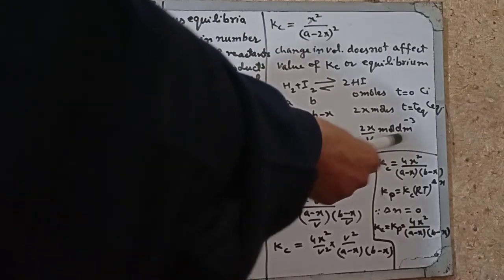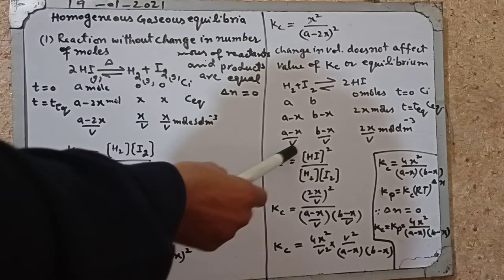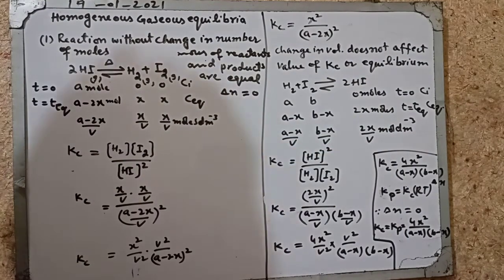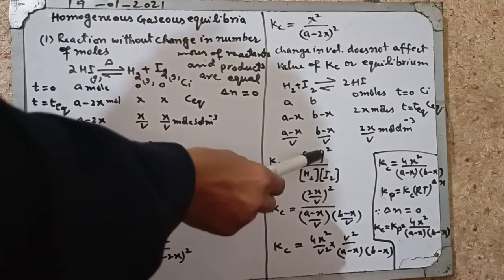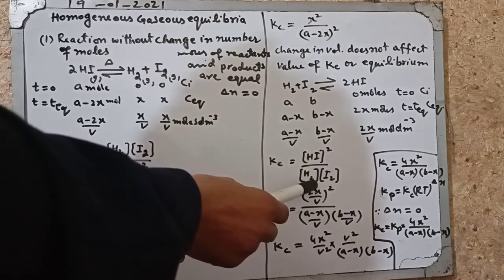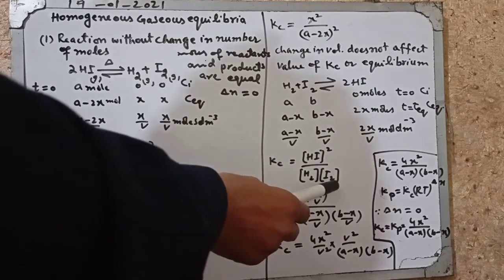Kc is product concentration over reactant concentration. HI concentration raised to 2 divided by I2 concentration into H2 concentration. Put the equilibrium concentration values.